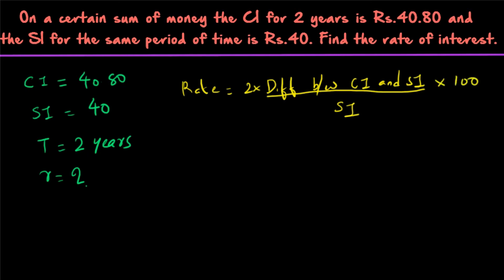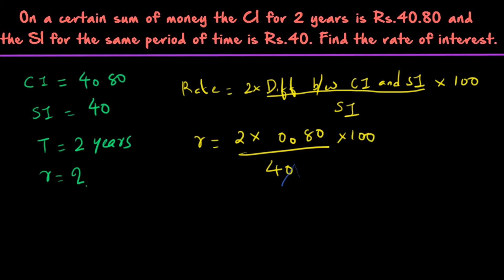Applying the formula: rate equals 2 into the difference between compound interest and simple interest, which is 0.80, divided by simple interest 40, into 100. Cancelling 40 and 100 gives 4 and 0 cancelled, leaving 2 and 5. So 0.80 into 5 equals 4, and the rate of interest equals 4 percent per annum.